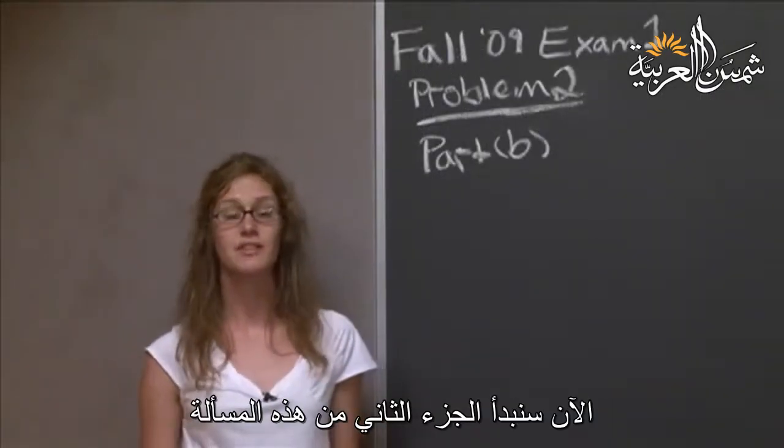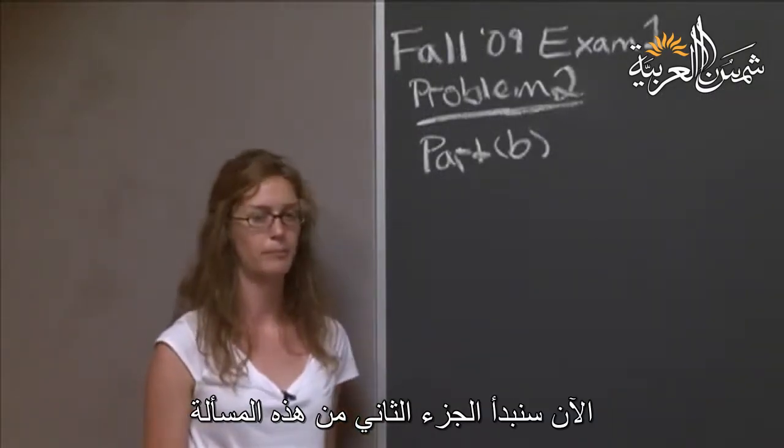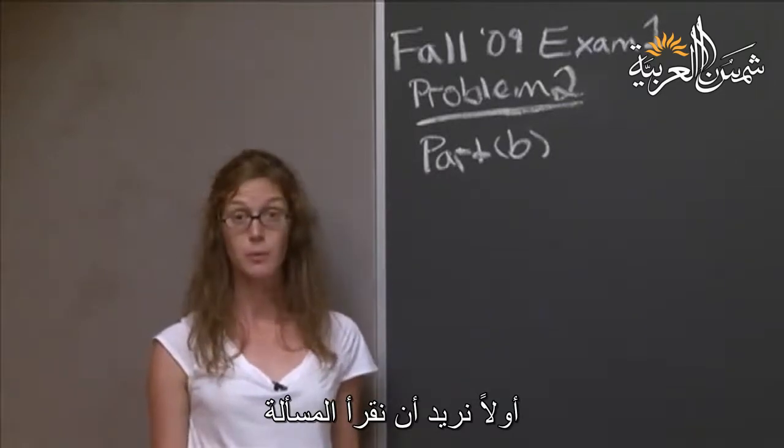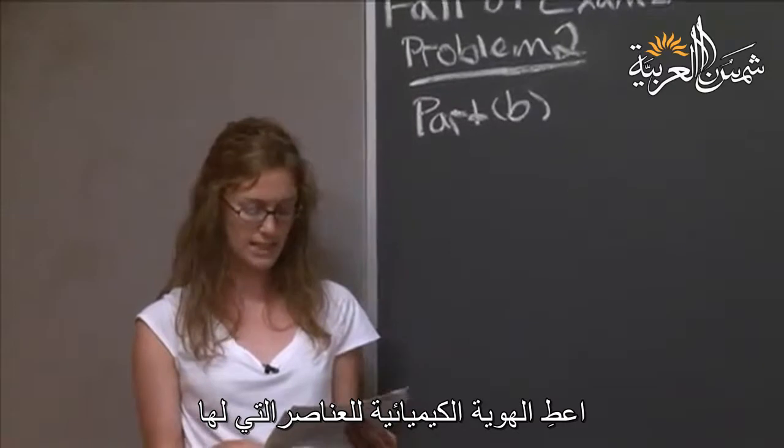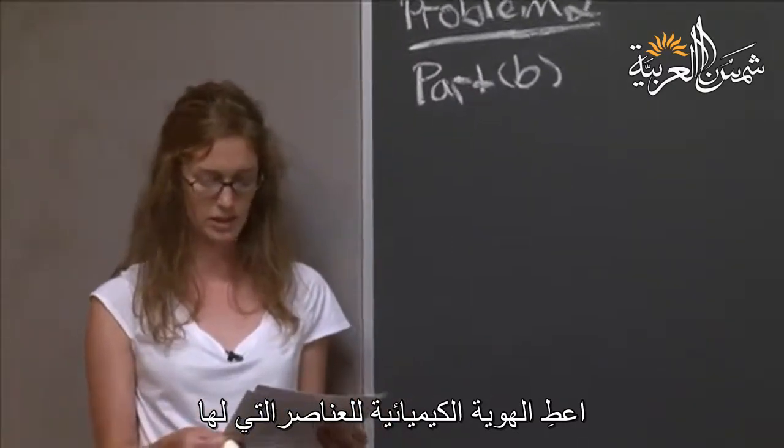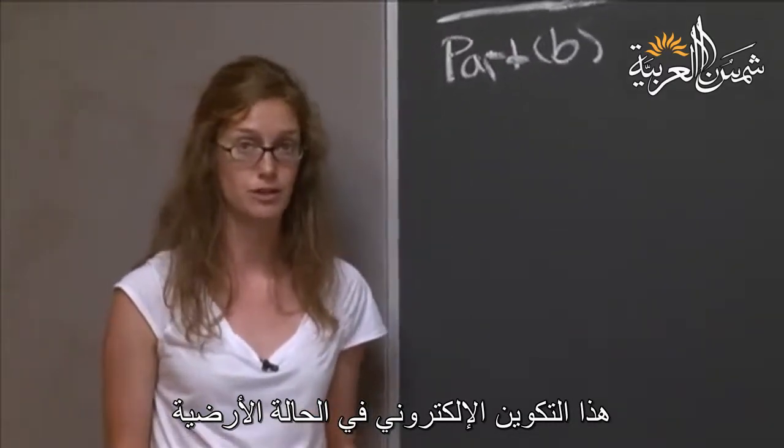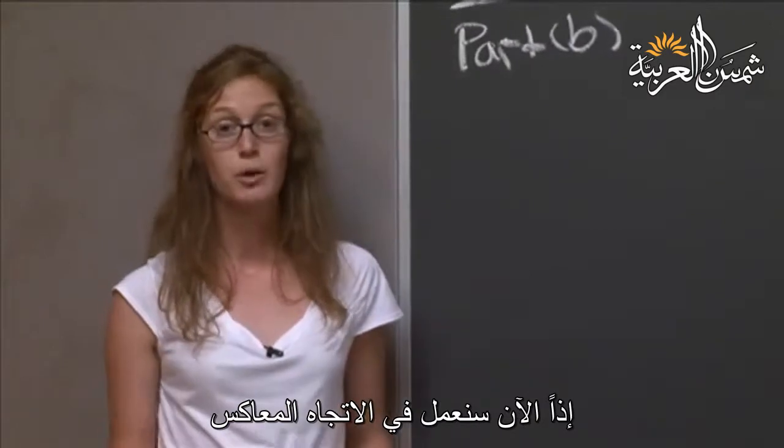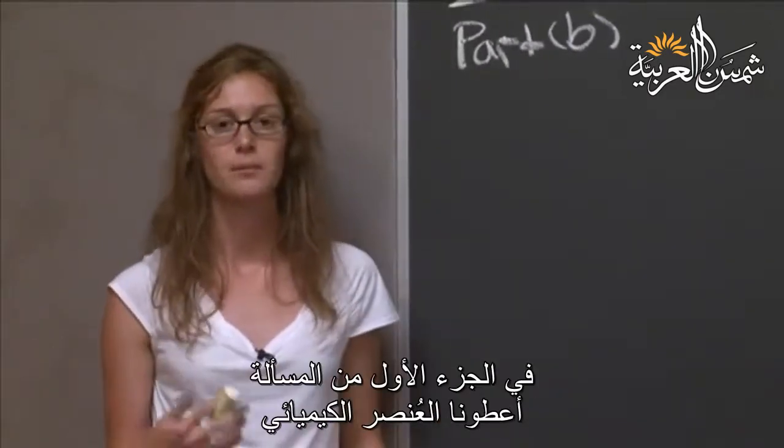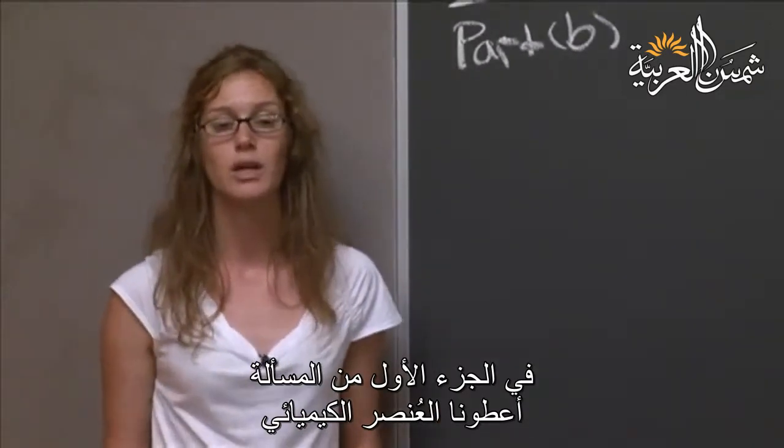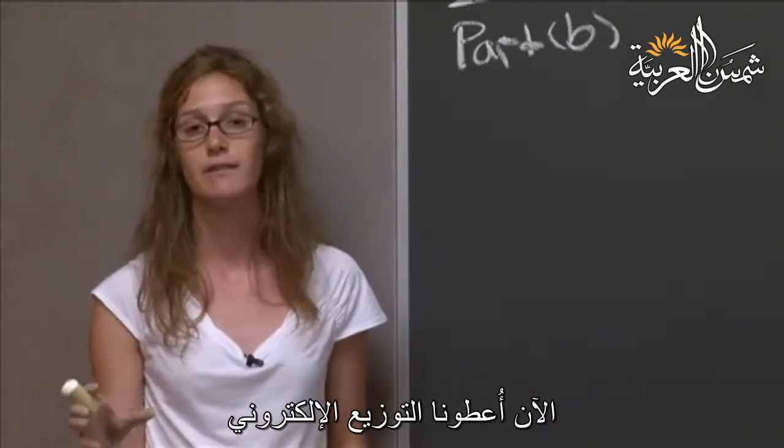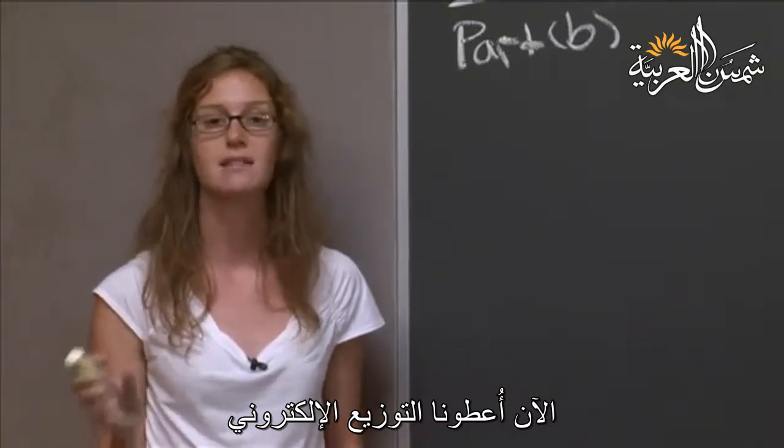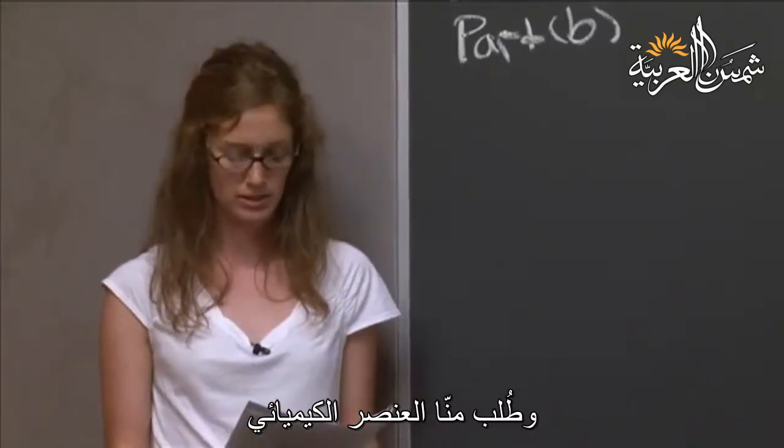Now we're going to start the second part of this problem, part b. So first we want to read what the question is asking. Give the chemical identities of the species with these ground state electron configurations. So now we're working in the opposite direction. In part a, we were given a chemical species and asked for the electron configuration. Now we are given the electron configuration and asked for the chemical species.